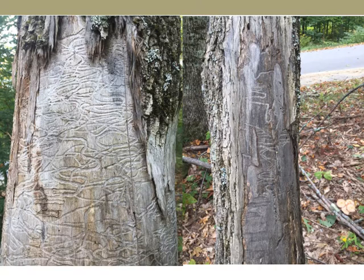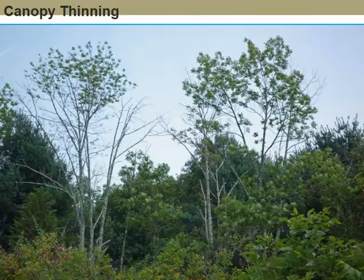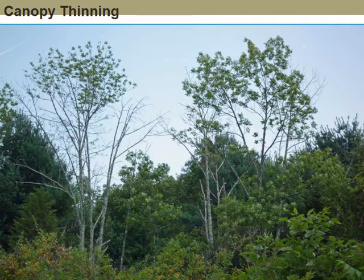Now we'll take a look at the signs and symptoms of the emerald ash borer. One of the most obvious and distinctive signs of EAB are the S-shaped galleries the larvae create under the outer bark of an ash tree. Other wood-boring insects will also create galleries, but you will know you have EAB if the galleries are S-shaped and on an ash tree. When you add each of these individual signs and symptoms together, you will know if you have EAB or if it's just another sign of ash tree decline.